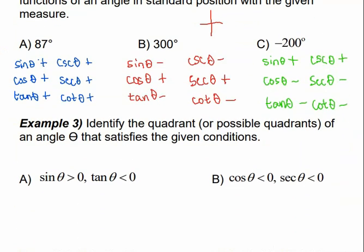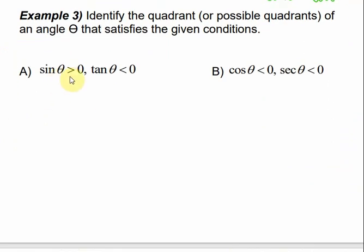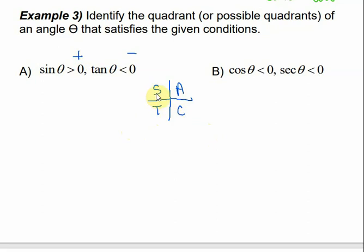Now we're going to identify the quadrant or possible quadrants of angle theta that satisfies given conditions. This says sine of theta is greater than zero — positive — and tangent of theta is less than zero — negative. So which quadrant has sine positive but tangent negative? In quadrant one they're all positive, so that doesn't work. In quadrant two, sine is positive and everything else is negative — that works. In quadrant three, tangent is positive. In quadrant four, cosine is positive. So quadrant two is the only quadrant that satisfies these conditions.